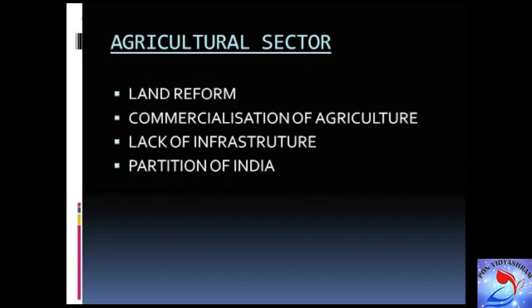The partition of India was also one of the causes of agricultural stagnation during that period. It adversely affected India's agricultural production, creating a serious shortage of raw materials for jute mills of Kolkata and textile mills of Bombay and Ahmedabad. Rich food-producing areas of West Punjab and Sindh went to Pakistan, which created a food crisis in the country.